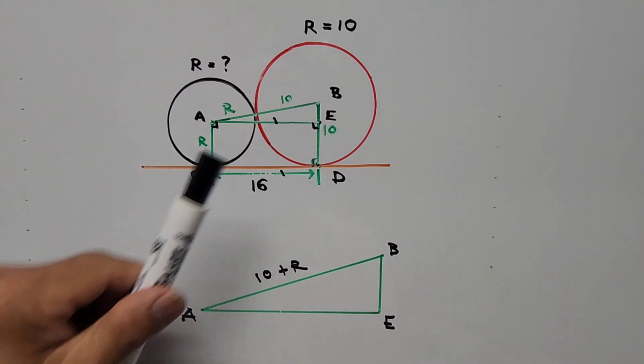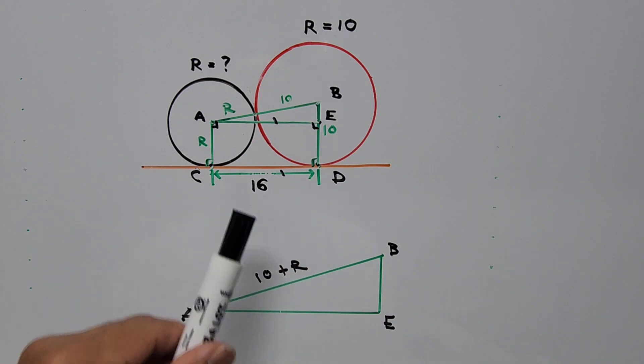And side AE, that is parallel to CD, that's 16 units.